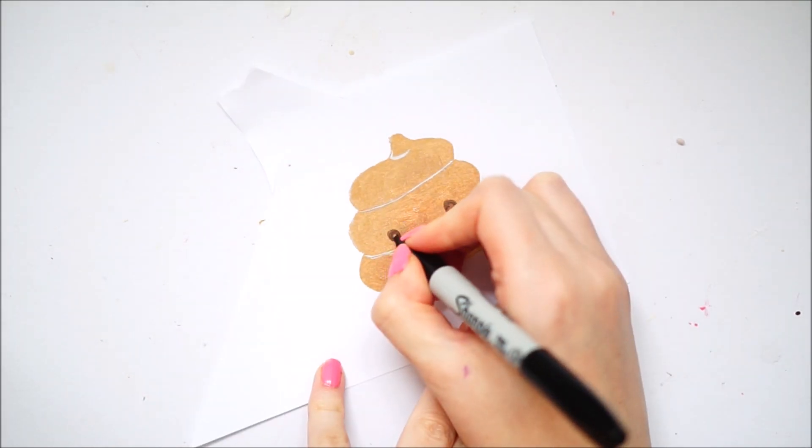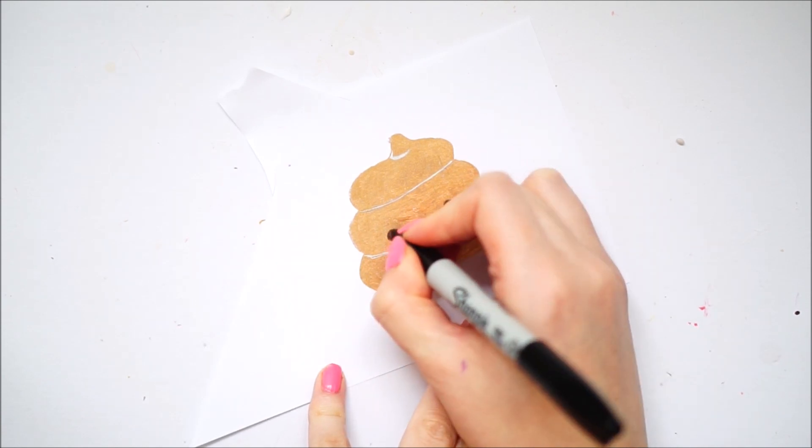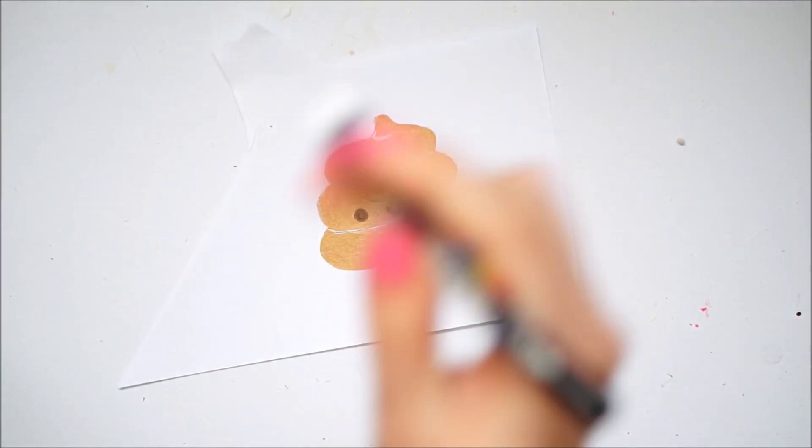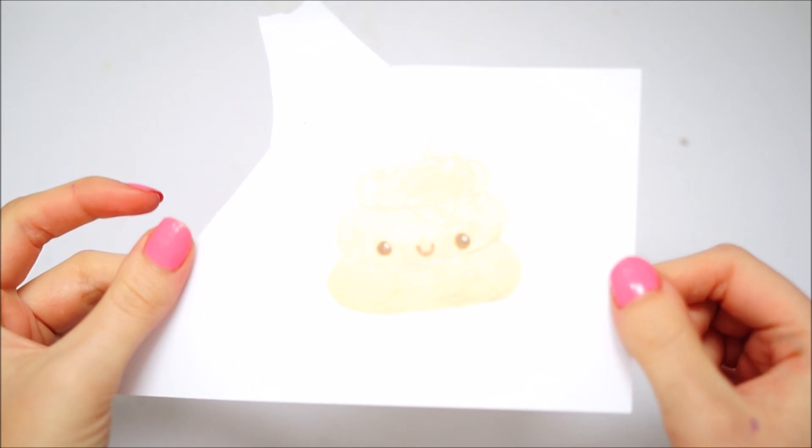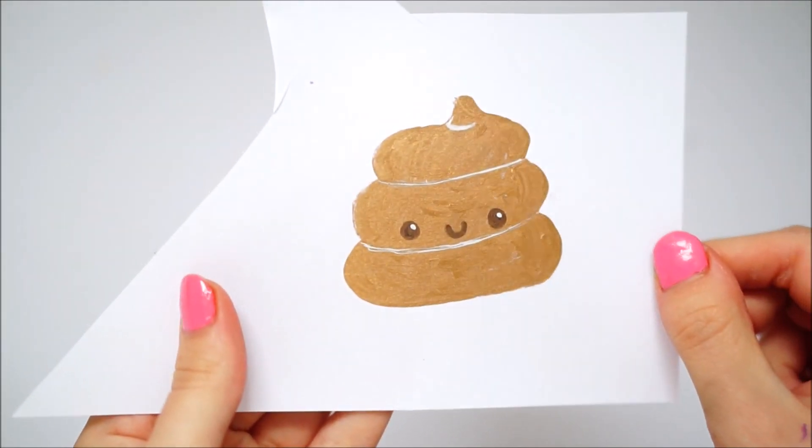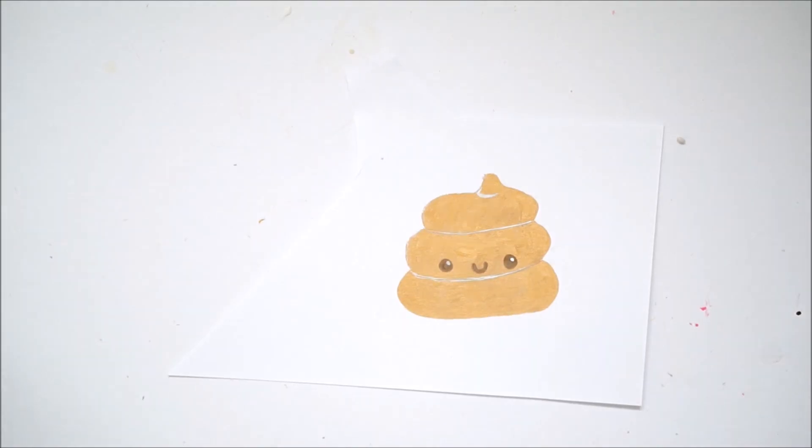Next I took a black Sharpie and drew on two eyes and a mouth. The black kept absorbing into the gold but I kind of liked the effect it gave as it was a more muted effect. I then took a white Posca pen and put two little dots on the eyes. As you can see here, the gold is really metallic and really does give a good effect.